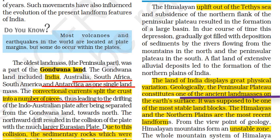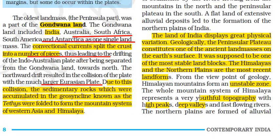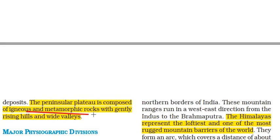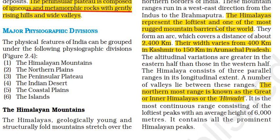The land of India displays great physical variation. Geologically, Peninsular India is one of the ancient land masses of the Earth's surface and is considered one of the most stable land blocks. The Himalayas and northern plains are the most recent landforms. The Himalayan mountain system forms a very unstable zone with youthful topography — very high peaks, deep valleys and fast-flowing rivers. The northern plains are formed of alluvial deposits, and the peninsular plateau is composed of igneous and metamorphic rocks. India is divided into six physiographic divisions: the Himalayan Mountains, the Northern Plains, the Peninsular Plateau, the Indian Desert, the Coastal Plains, and the Islands.